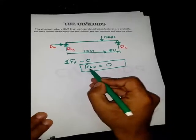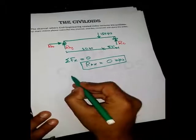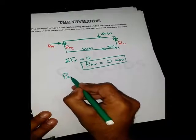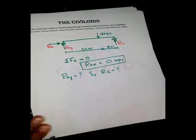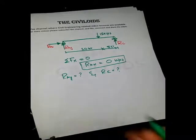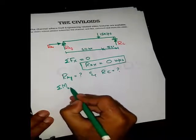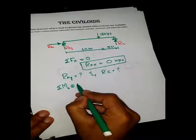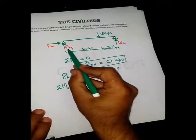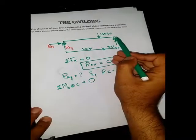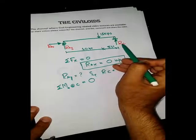To determine the other unknowns, RaY and Rc, we will use the remaining equilibrium equations. To find RaY, we take the sum of moments at C equal to zero. If you want to determine Rc first, you would instead take the sum of moments at A equal to zero.